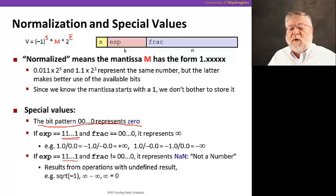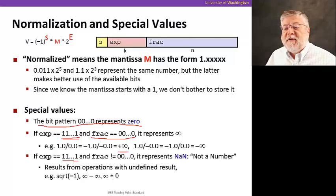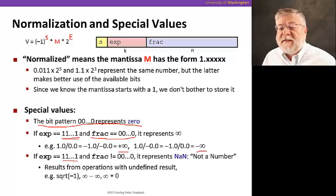We're also going to reserve an exponent of all ones for two other kinds of values that we need. If the exponent is all ones, and the fractional part is all zeros, then that's going to represent infinity. And, of course, we'll have positive infinity and negative infinity, because we can have the sign bit represent that for us.